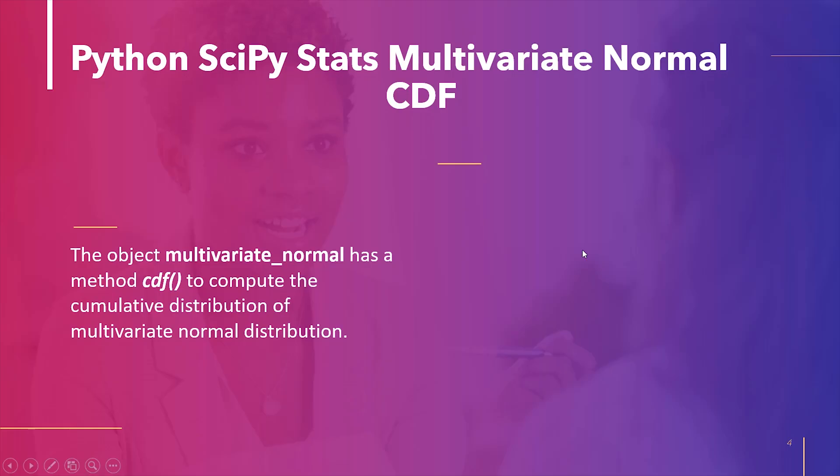The next topic is Python SciPy stats multivariate normal CDF. The cumulative distribution function is used to describe the probability distribution of random variables. It can be used for a discrete, continuous, or mixed variable. A random variable's cumulative probability is calculated by adding the probability density function. To calculate the CDF of the multivariate normal distribution, use the method cdf in the object multivariate_normal.